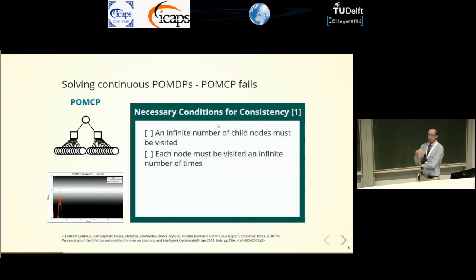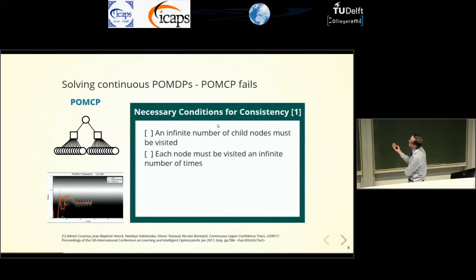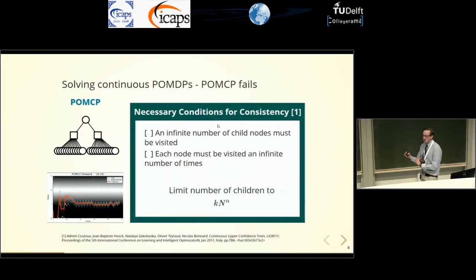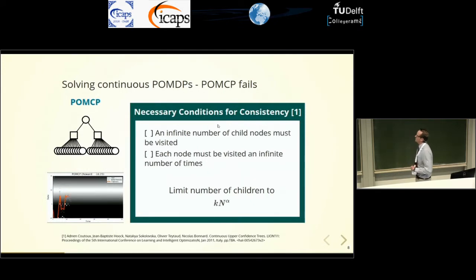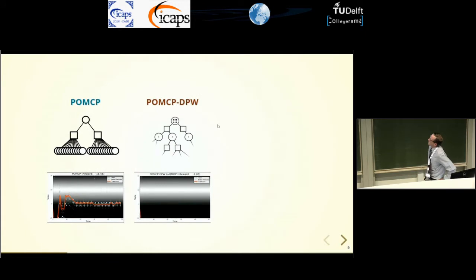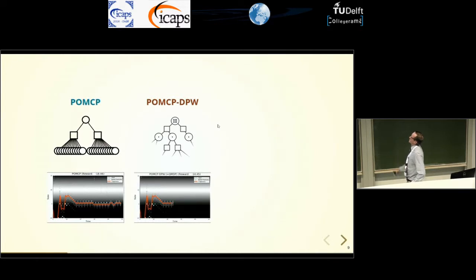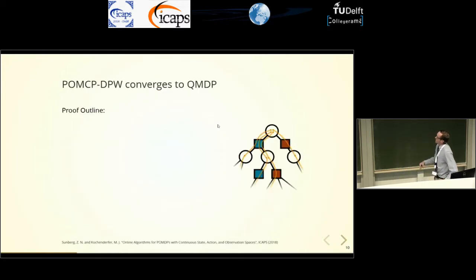Researchers for the fully observable case have identified necessary conditions for consistency. First, an infinite number of child nodes must be visited, and each node must be visited an infinite number of times. They proposed double progressive widening (DPW), which limits the number of children of each node to K times N to the alpha, where K and alpha are tuning parameters and N is the number of times the node has been visited. Applying this to POMCP gives an algorithm called POMCP DPW, but it actually performs exactly the same. It turns out we can prove that POMCP with DPW converges to the QMDP approximation.